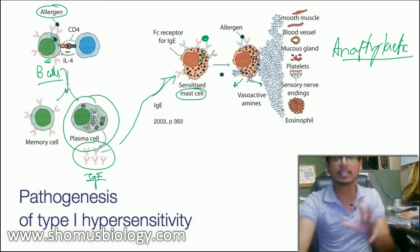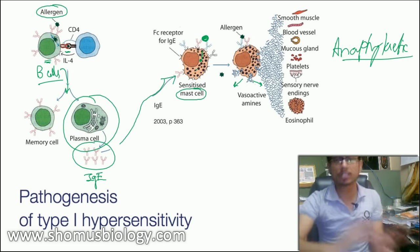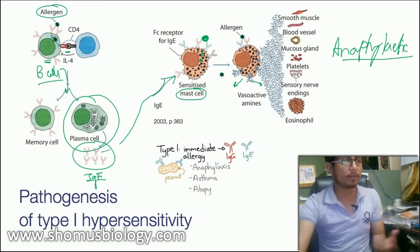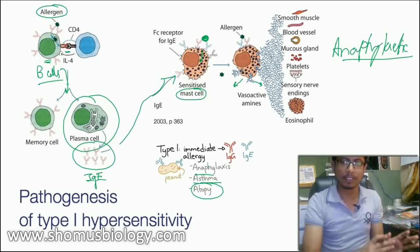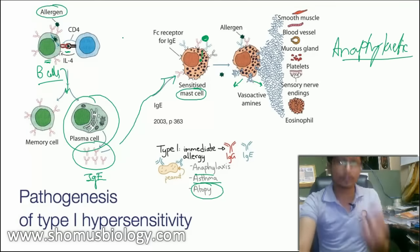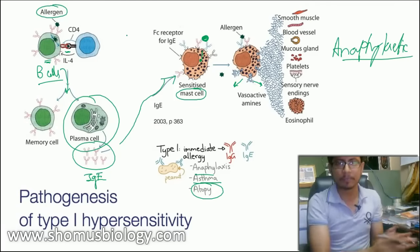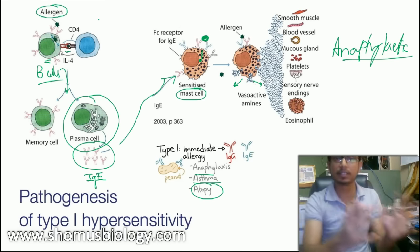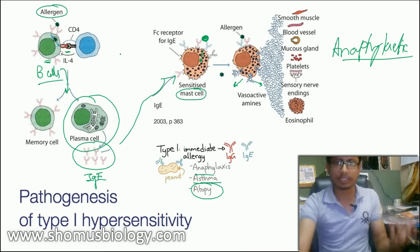These are the typical symptoms of allergy that we know. The vast range of allergies we know of belongs to Type 1 hypersensitivity. This type of interaction is involved with anaphylaxis, asthma, and atopy. People can be allergic to different things — for example, some are allergic to pollen, some to dander or animal hair. All of those belong to Type 1 hypersensitivity.